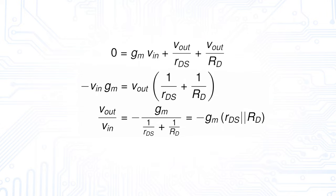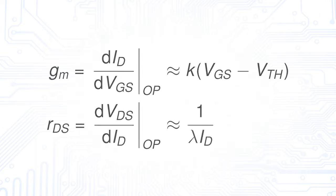which equates minus Gm times Rds parallel connected to Rd. Rds and Gm can be calculated by formulating the derivative.